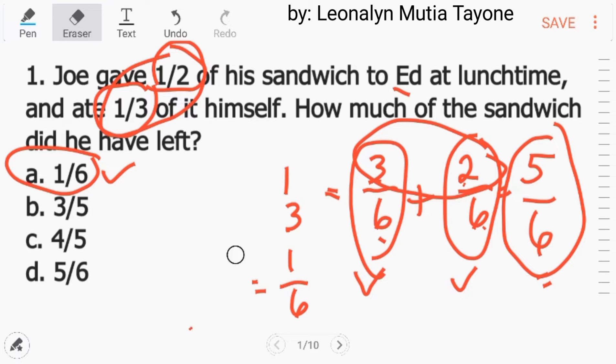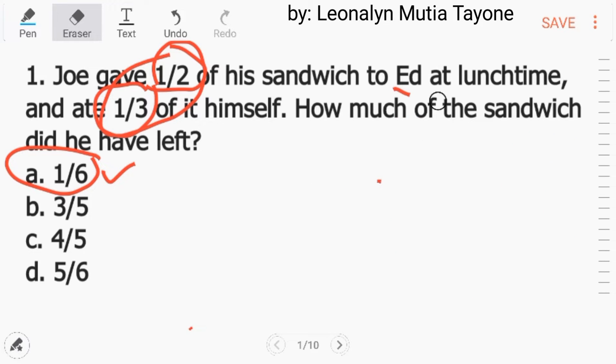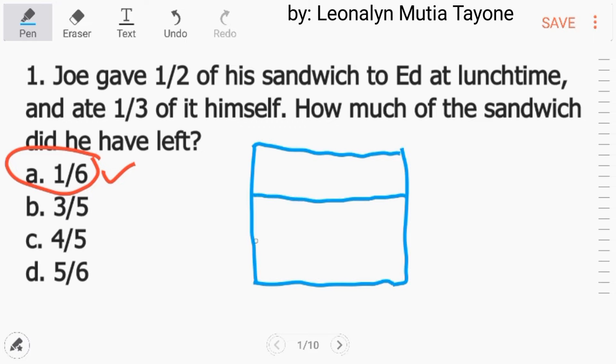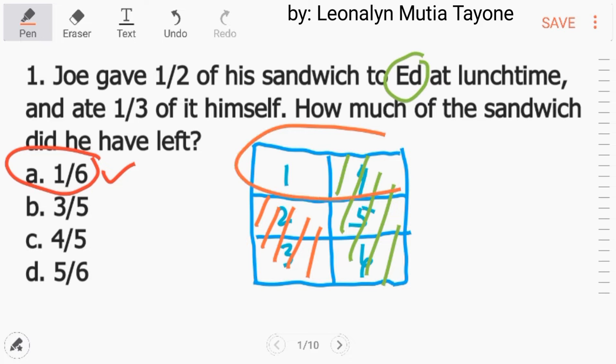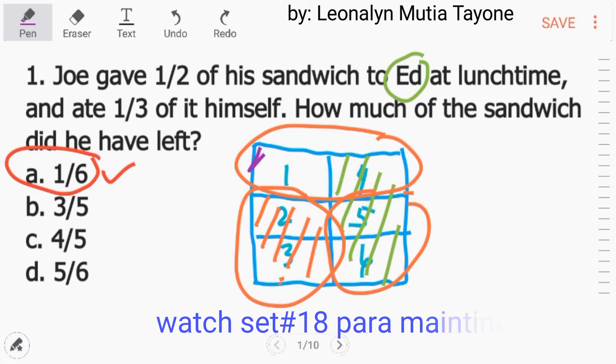Para mas lalong maintindihan lang, gawin natin ganito. Mag-drawing tayo ng sandwich. So, ito na yung sandwich, at i-divide natin ng anim. Lagyan muna natin ang number para mas klaro lang. Tapos, ito yung half ang binigay kay Ed. At ito naman yung 1 third. Kasi, yan, 1, 2, 3. So, ito yung 1 third. So, ang natira, ito na lang siya. At yan, ang equivalent niyan ay 1, 6.